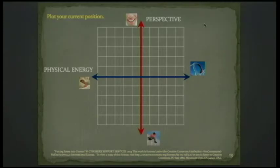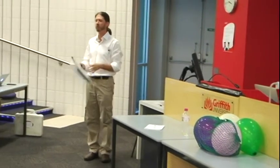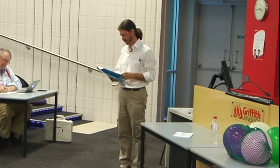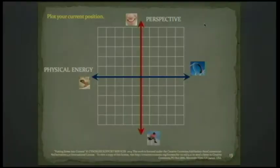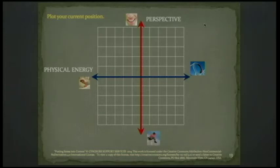Take a minute on your grid to plot where you are just at this moment. Where is your energy and where is your perspective? For me, I'm sitting here with a fair amount of energy — I'm towards the high end of the scale — and I'm bouncing between a positive perspective because I know my stuff and I'm happy to be here, but I'm also aware of time constraints and wondering if I'll fit everything in. I've got eight pages of notes and 80 slides. So there's a bit of anxiety sitting around where I'm at, and I'm bouncing between those two quadrants.